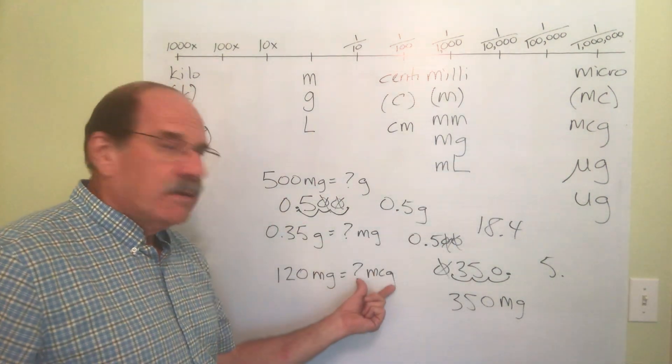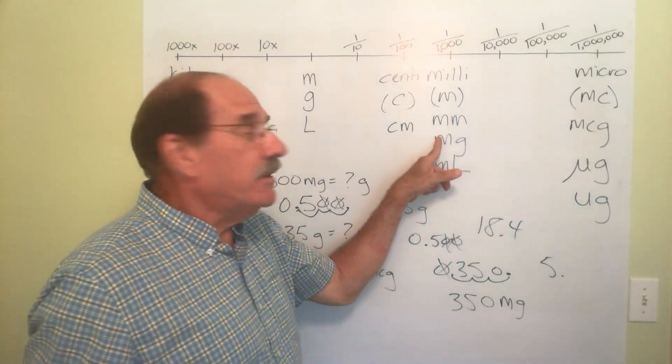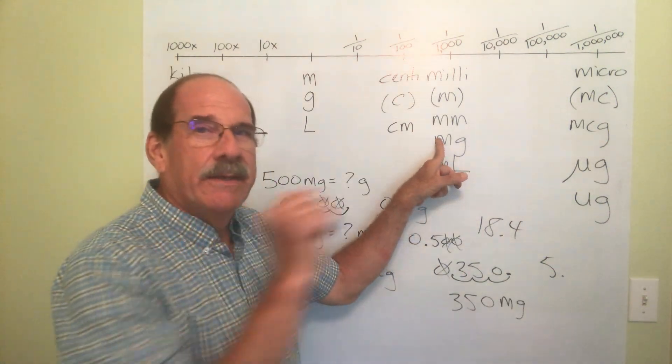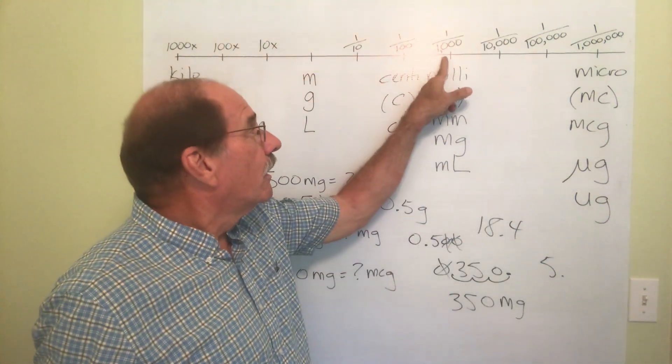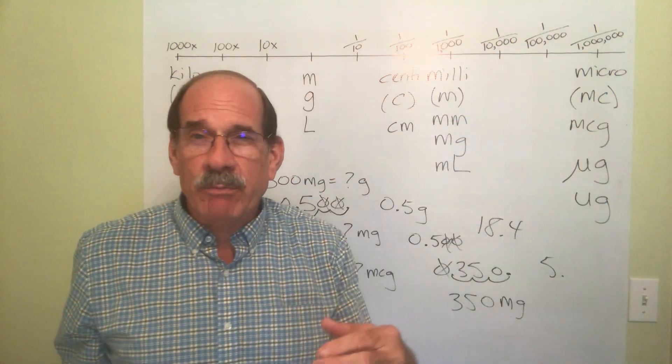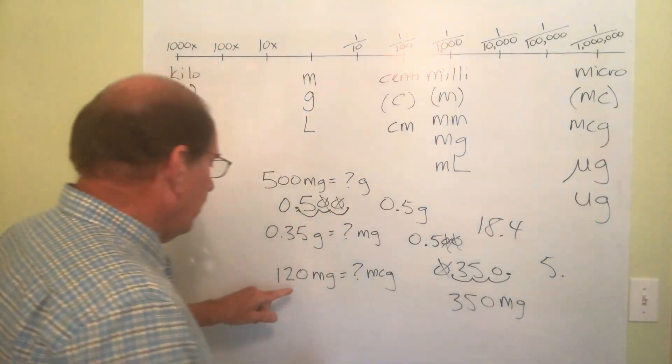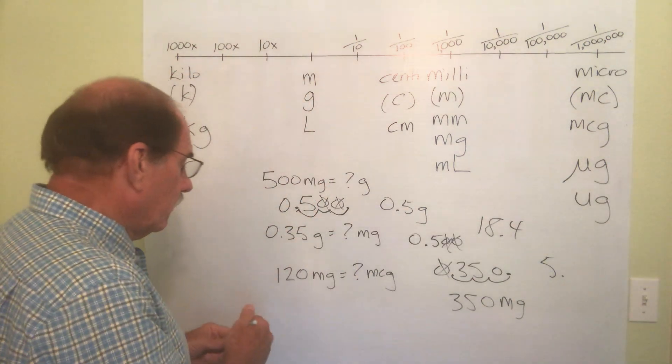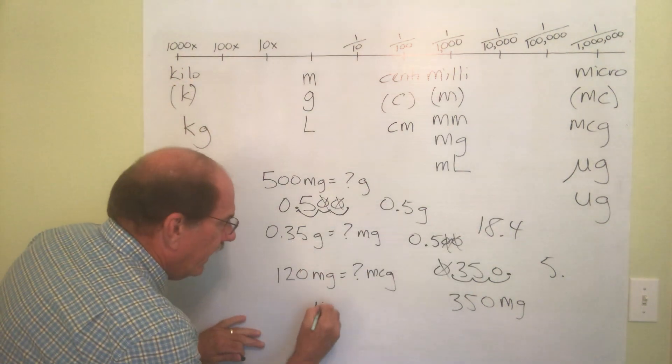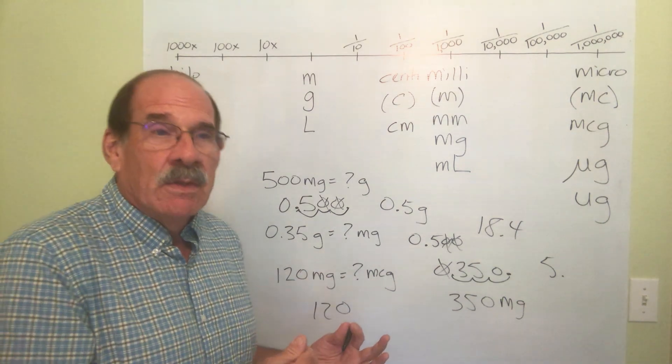Well where am I right now? I'm in milligrams, that's right here. Where am I trying to go? To micrograms. I'm trying to get over here. So if I'm right here right now and I'm trying to go to there, I move which way? To the right. How many places? One, two, three. I move the decimal point three jumps to the right.